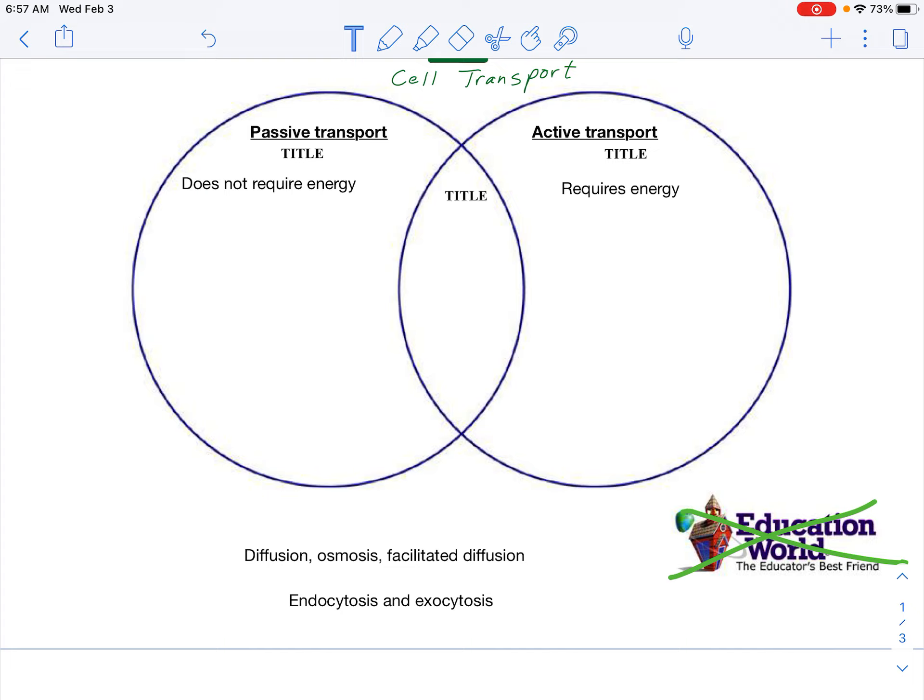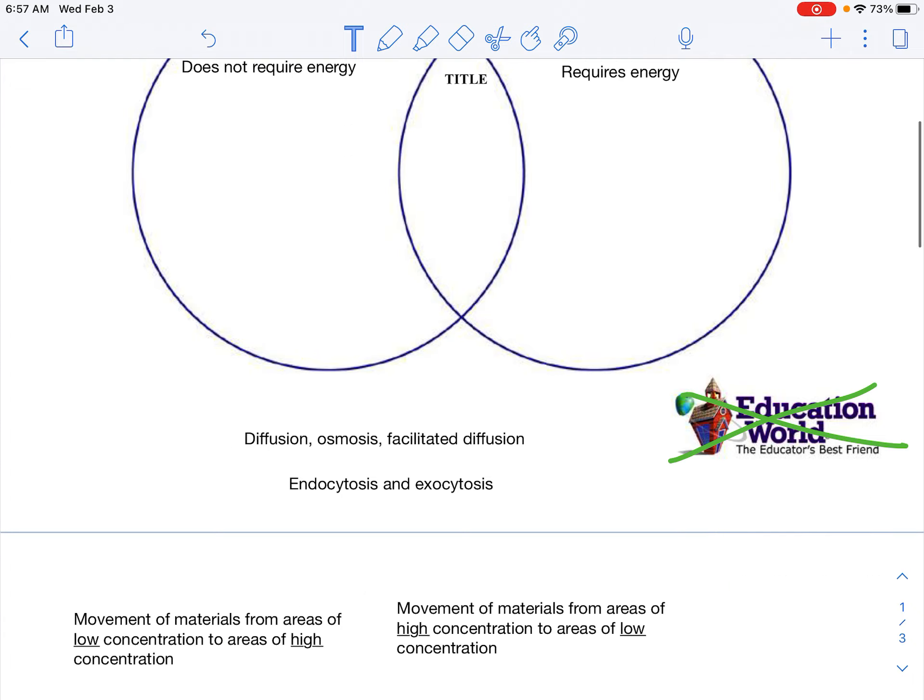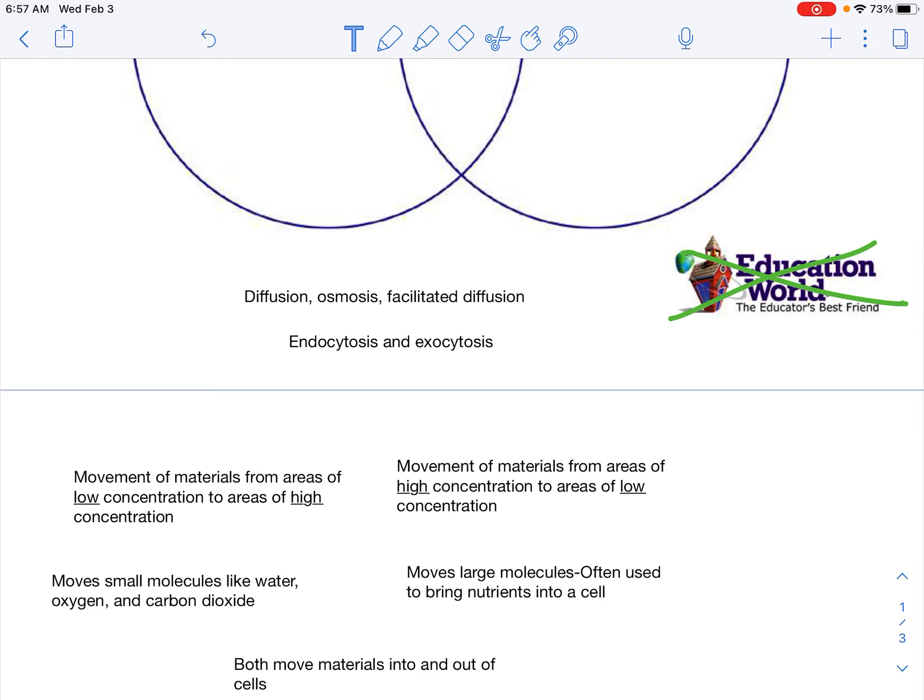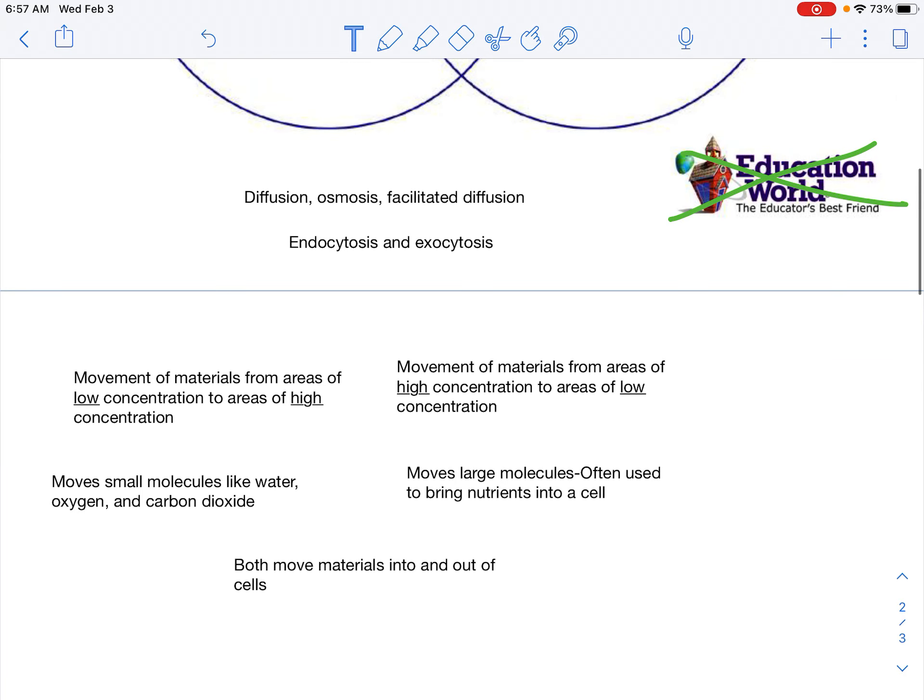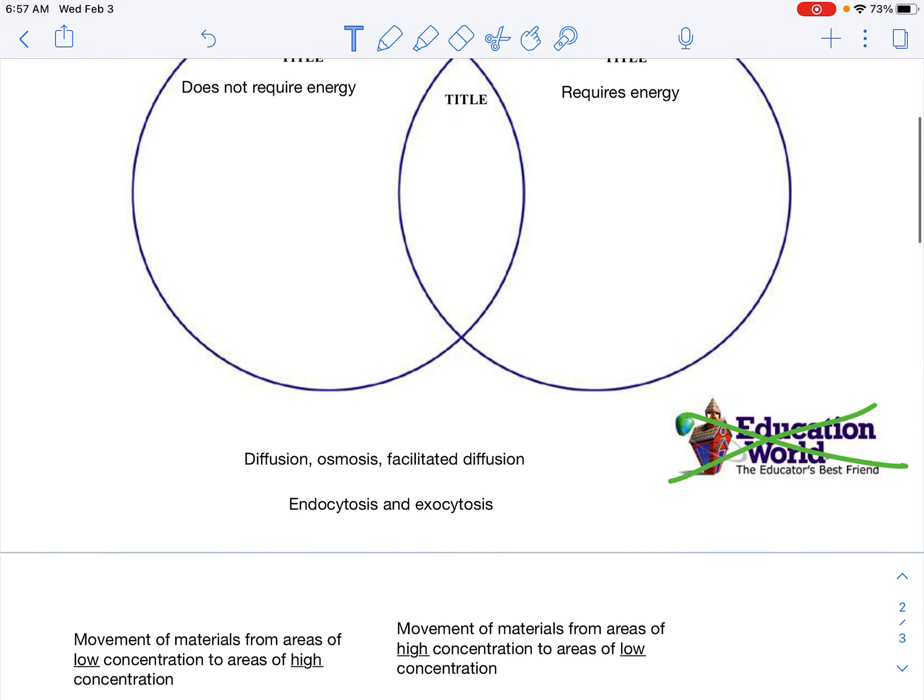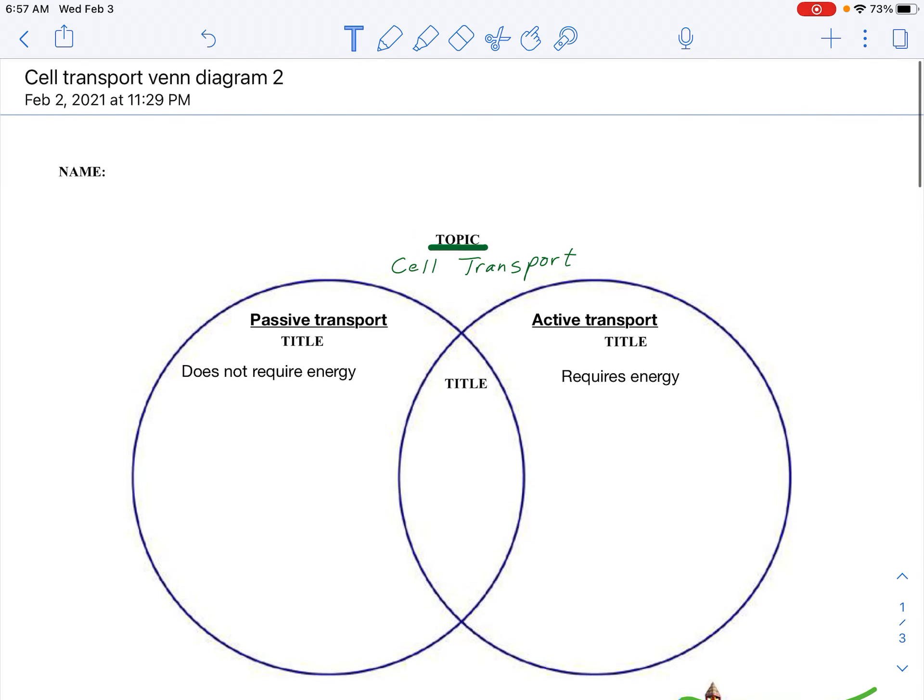So we're just going to be comparing the two different kinds of transport by dragging and dropping the examples and some more definitions into the correct sides of the Venn diagram. There are some on the second page here so don't miss those. Use your lesson outline or the science book to help you out with this. All right, hope this helps, have a great day.